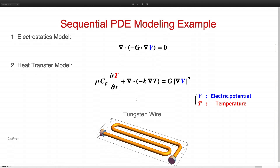Here I have a tungsten wire. At both ends I apply a voltage, which introduces electric current flow within the wire. Due to this current flow, part of the energy converts into thermal energy and heats up the wire. To model this, I will first construct an electrostatics model to simulate the electric field V, and then based on this electric field I will construct a heat transfer model to simulate the temperature evolution within the wire.